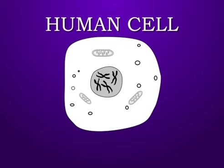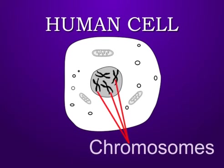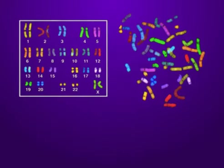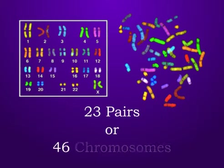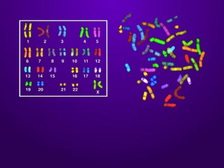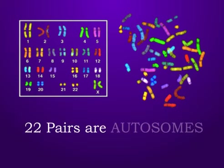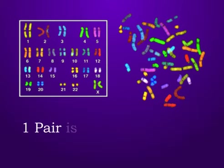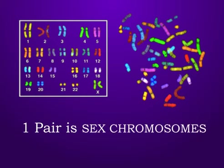This is a human cell. You may see some thread-like structures in it. These are chromosomes. There are 23 pairs or 46 chromosomes in a human cell. Out of which, 22 pairs, that is 44 chromosomes, are autosomes and one pair is called sex chromosomes.